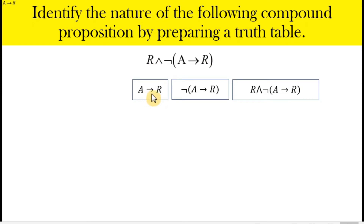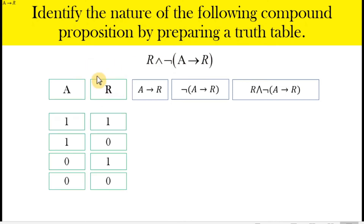Another example: we have a compound proposition. If we break it down, we have a implies r, then the negation of that part, and then the given proposition. There are only two simple propositions — a and r — so we prepare four rows, which exhaust all possible truth value combinations.